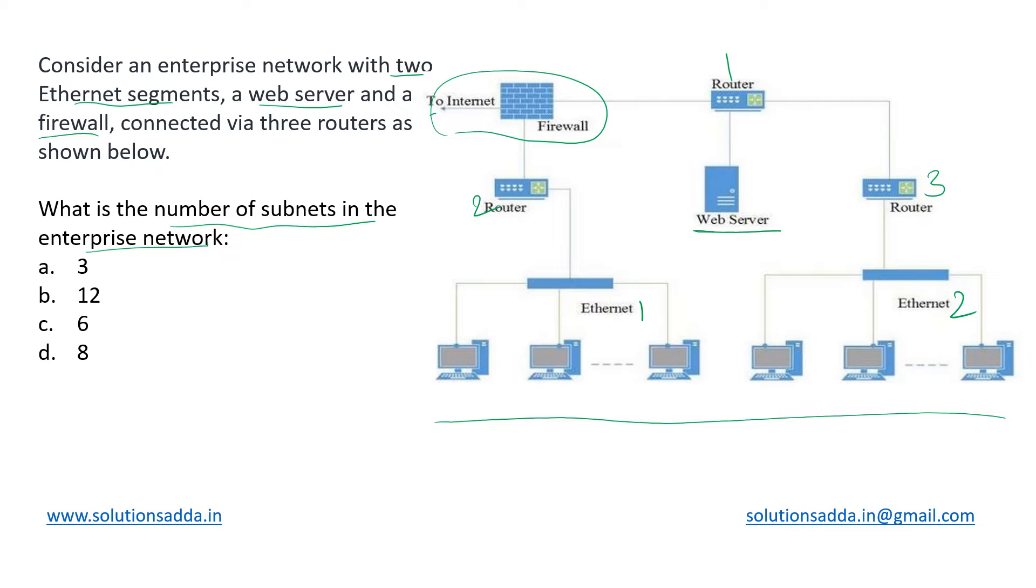So this is the internet over here and going through the firewall internally this is getting divided into two parts over here. So half of the IP addresses will be given to router 1 and other half will be given over here to router 2.